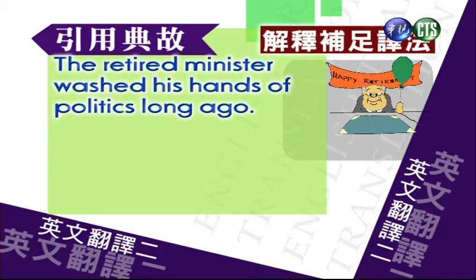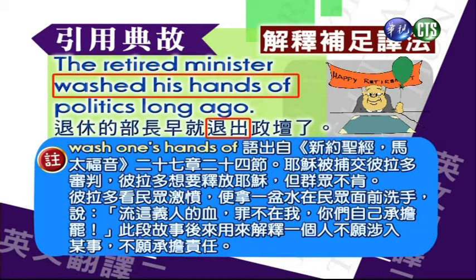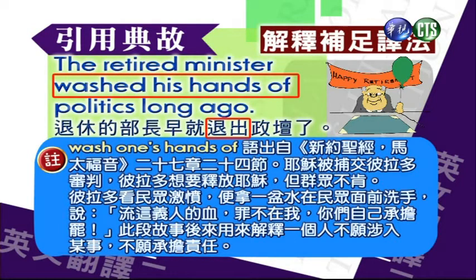The retired minister washed his hands of politics long ago. 退休的部长早就退出政坛了。我们要注释什么叫wash one's hands of。这句语出自新约圣经马太福音27章24节。耶稣被捕，交给比拉多审判。比拉多想要释放耶稣，但群众不肯。比拉多看民众激愤，便拿一盆水在民众面前洗手说，流这一人的血，罪不在我，你们自己承担吧。那么这段故事后来用来解释一个人不愿涉入某事，不愿承担责任。